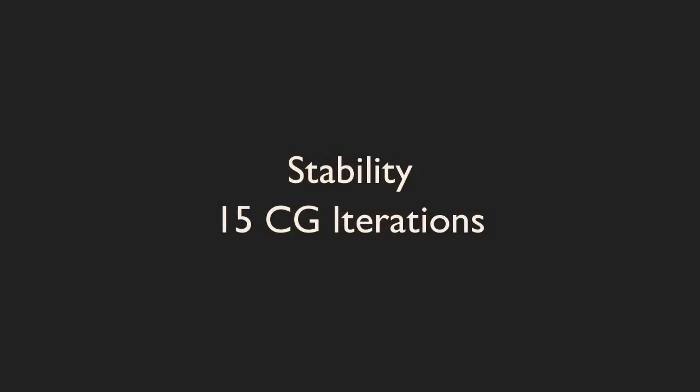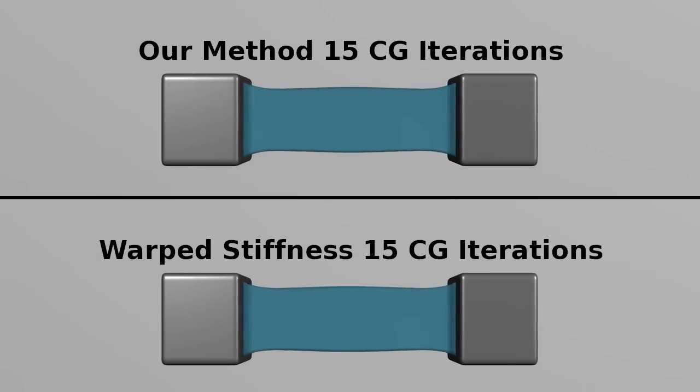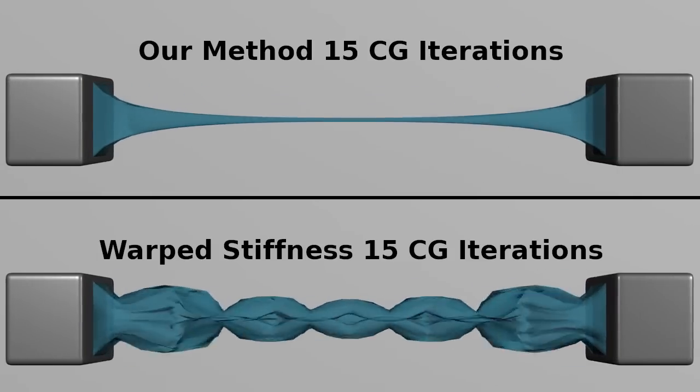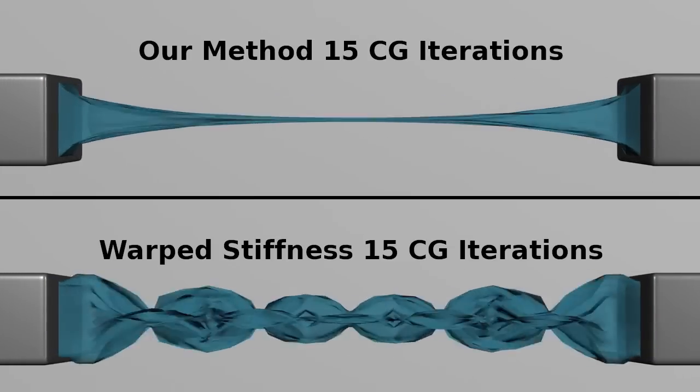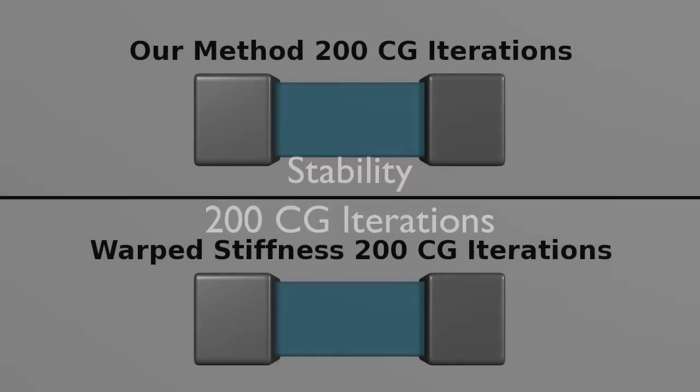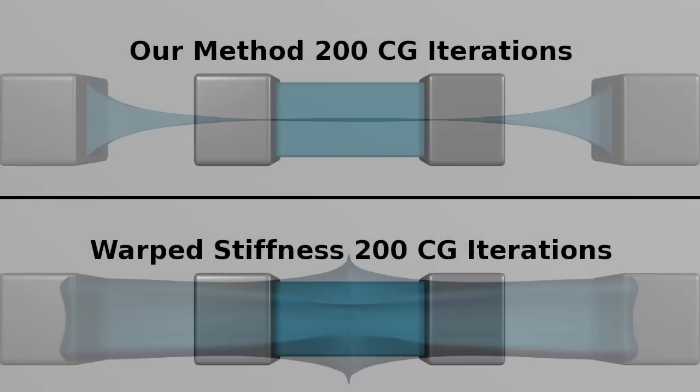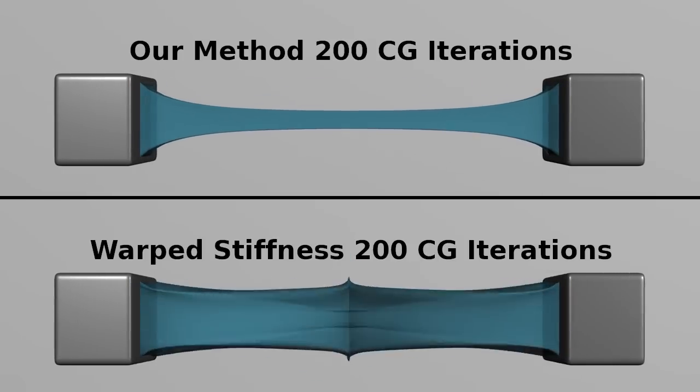Here we compare our stability to that of warped stiffness. With an insufficient number of CG iterations, warped stiffness becomes unstable. But even if we increase the CG iterations to 200, warped stiffness is also unstable. Here it is from a different view.